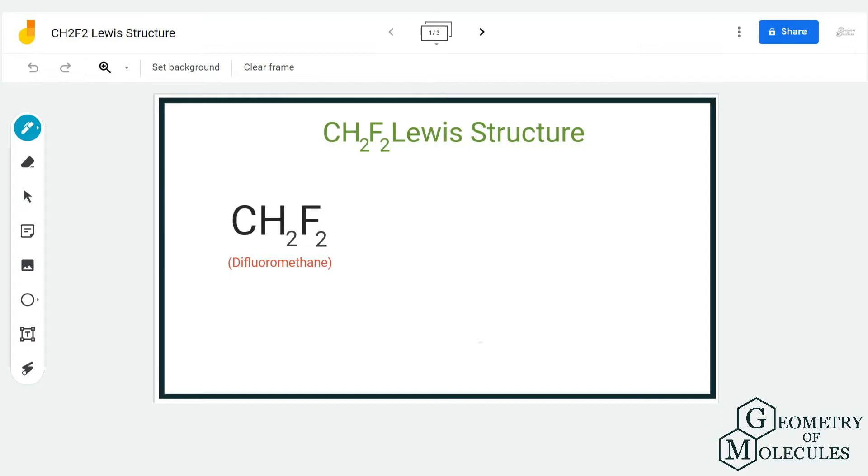at the total number of valence electrons. Here we have one atom of carbon, two atoms of hydrogen, and two atoms of fluorine. Carbon has four valence electrons, each hydrogen atom has one valence electron, and each fluorine atom has seven valence electrons.